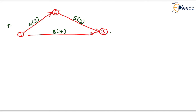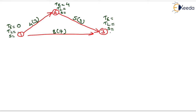We will now calculate TE, TL, and slack at each event. TE equals 0 for event 1. For event 2, TE equals 0 plus 4, which is 4. For event 3, TE is the maximum of two paths: 4 plus 5 equals 9 from event 2, and 0 plus 8 equals 8 from event 1. The maximum is 9, so TE for event 3 equals 9.